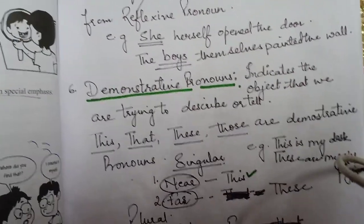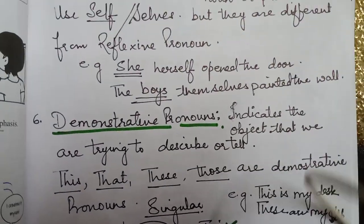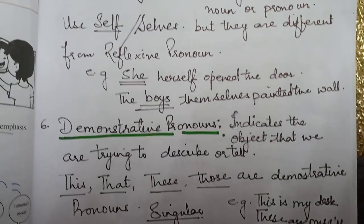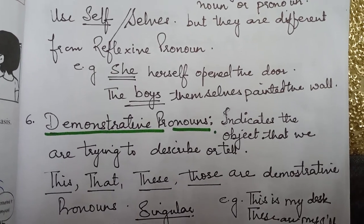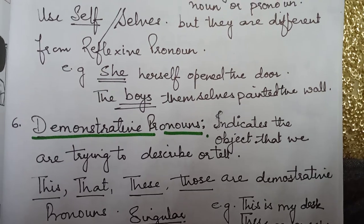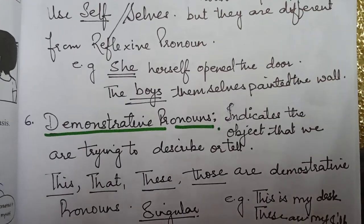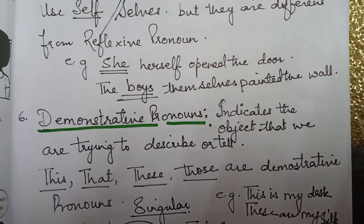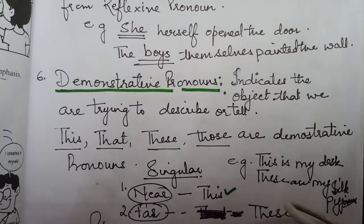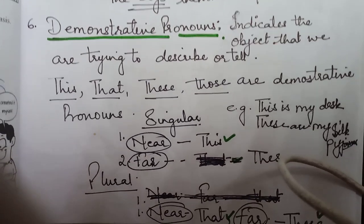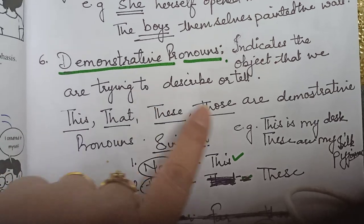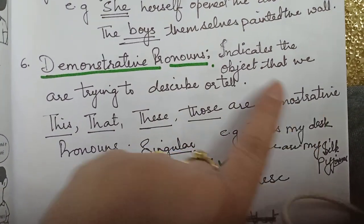Demonstrative pronouns indicate the object that we are trying to describe or tell. For example: this, that, these, and those are demonstrative pronouns. 'This is my desk. These are my things.' We use 'this' for things that are near and 'these' for things that are far off. 'That' is used for things that are near and 'those' for things that are far off.